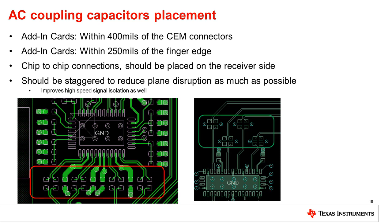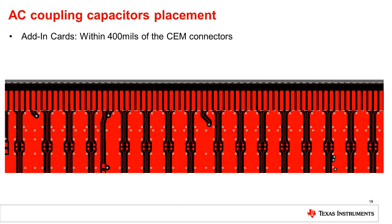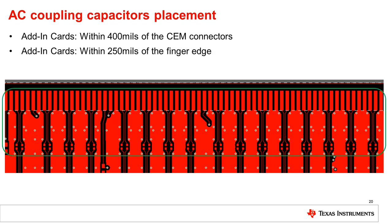It is good practice to provide ground and power plane voids under AC coupling caps to reduce parasitic capacitance from causing impedance drop. Similarly, the location of the AC coupling cap is also important. Even though we have a void under the cap, TDR observations have shown that there is still some impedance drop. To remedy this, we can place AC coupling caps within a quarter wavelength of the impedance discontinuity. Close to the card connector or finger edge is a good place for these caps. If there is a chip-to-chip connection, then the capacitor should be placed on the receiver side where the ESD structure is more dominant.